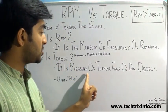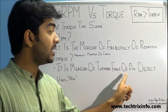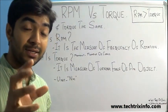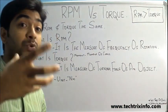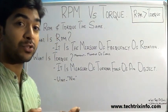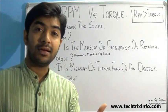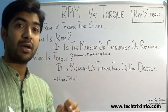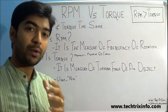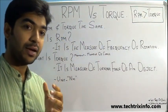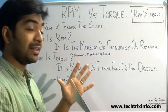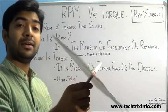Torque is the measure of the turning force of an object. Both RPM and torque are very closely related to each other.